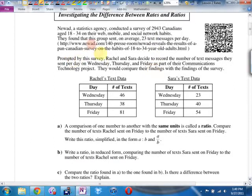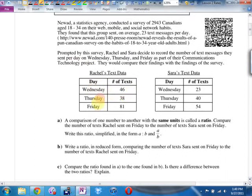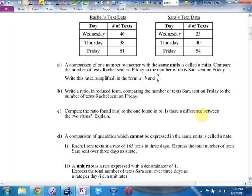Prompted by this survey, Rachel and Sarah decide to record the number of text messages that they sent per day on Wednesday, Thursday, and Friday for a communications technology project. Rachel sends 46 on Wednesday, 38 on Thursday, 81 on Friday. Sarah sends 23 on Wednesday, 40 on Thursday, 54 on Friday. Why would Friday spike like that? Probably getting ready for the weekend and people making plans.